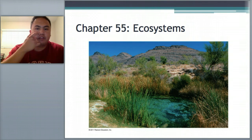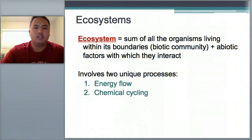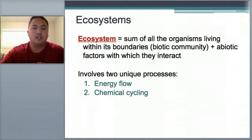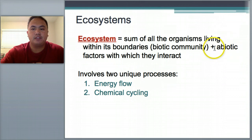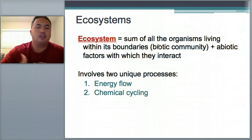The real definition of an ecosystem is the sum of all organisms living within its boundaries — a biotic community — plus the abiotic factors in which they interact. Abiotic means non-living, and biotic means living, so an ecosystem is a combination of a community of living things plus non-living things.